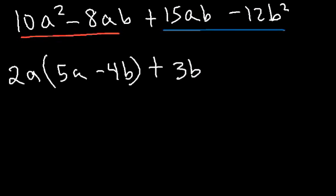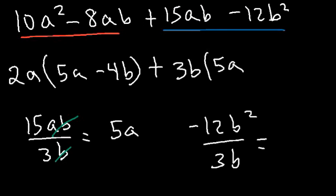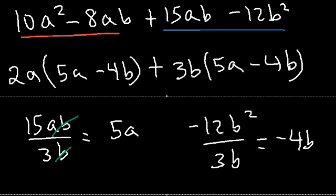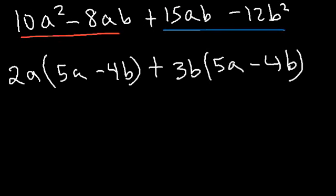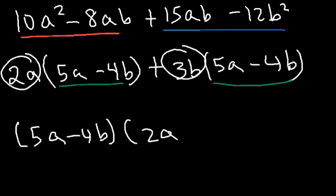The GCF in the last two terms is 3b — we can take out a 3 from 15 and negative 12, and b from ab and b squared. 15ab divided by 3b is 5a, and negative 12b squared divided by 3b is negative 4b. Both pairs give the same factor 5a minus 4b, so we factor that out and are left with 2a plus 3b. The answer is 5a minus 4b times 2a plus 3b.